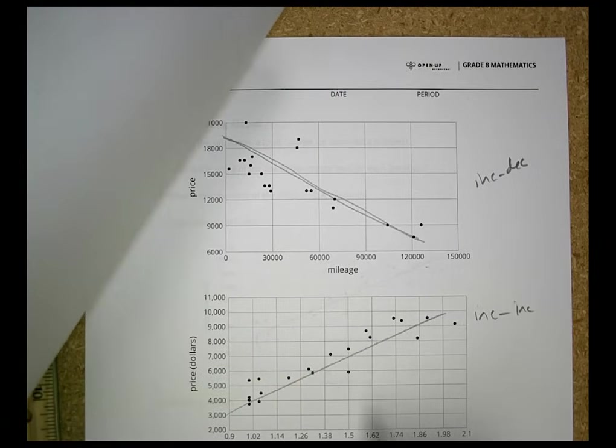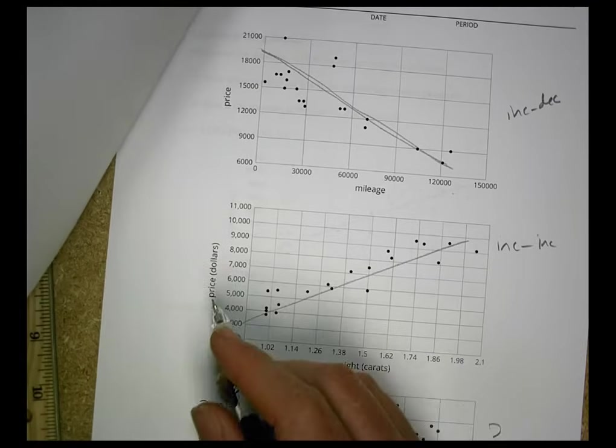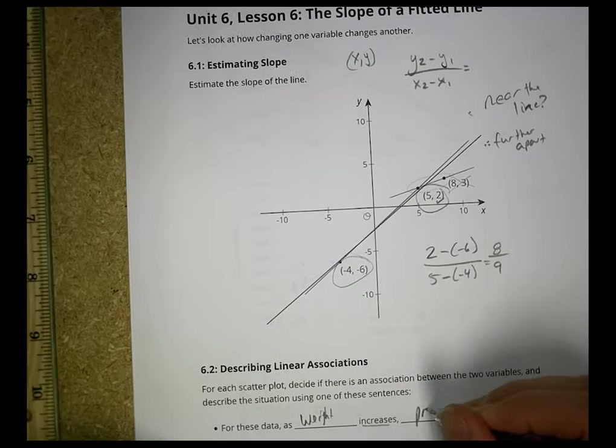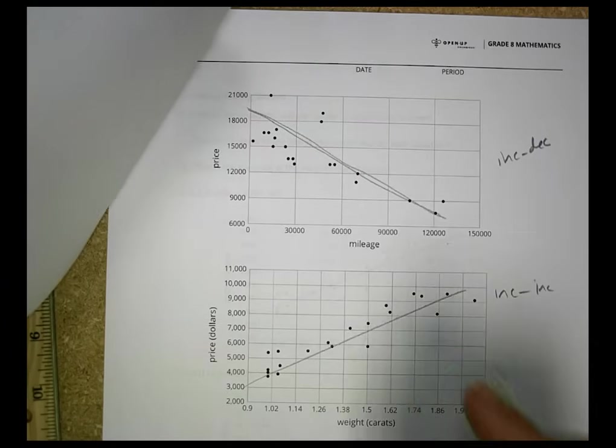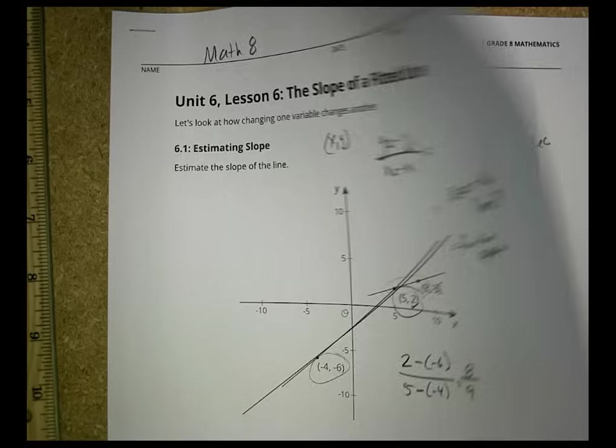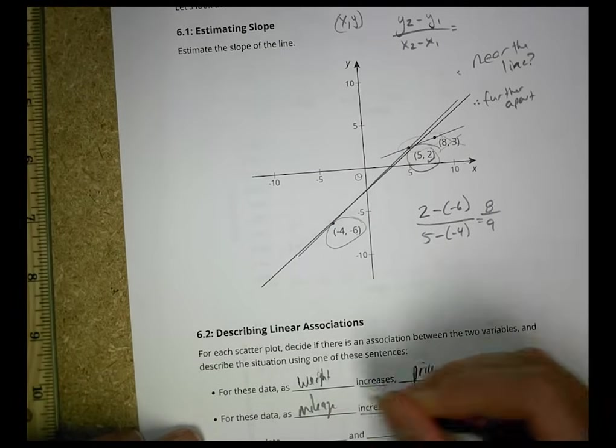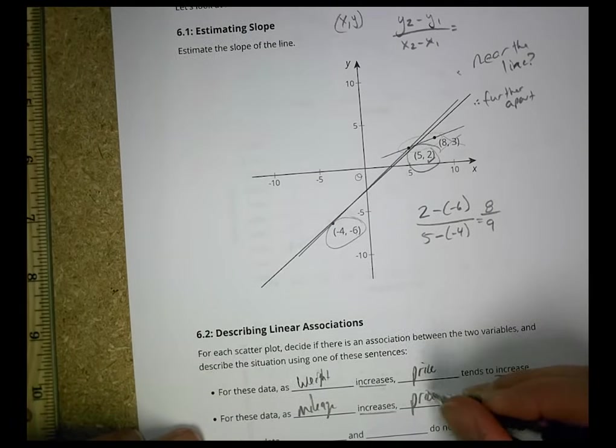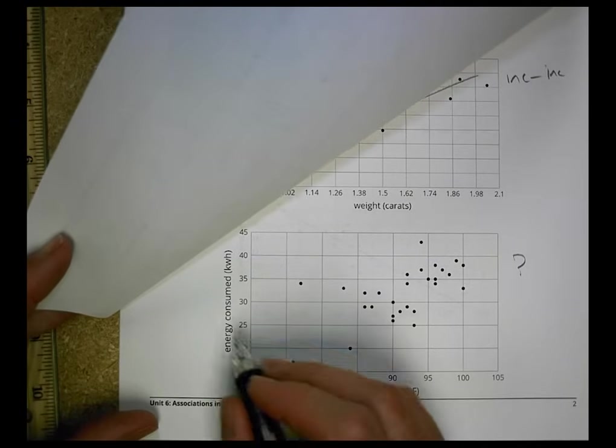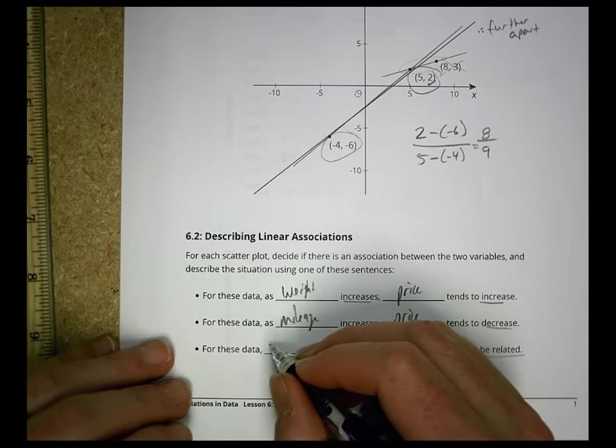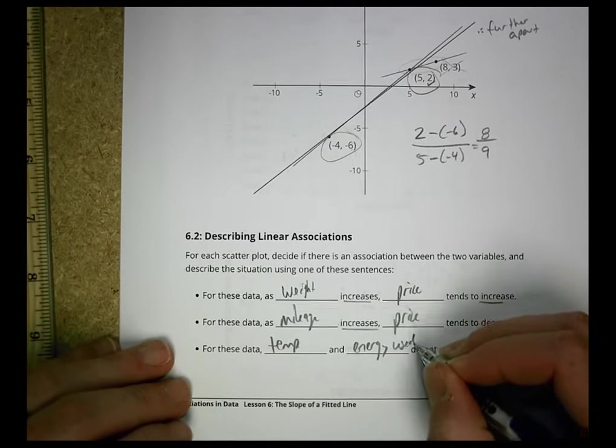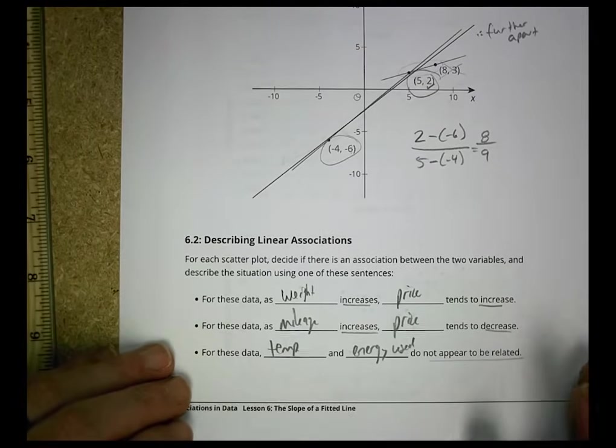So for increase to increase, we'd say as weight increases, price increases. So as the weight of the diamond increases, the price increases. For this one, we'd say as the mileage increases, the price decreases. As mileage increases, the price of a car tends to decrease. And the last one, as temperature increases, energy, eh. So we're going to go temperature and energy used or consumed don't appear to be related. At least not in any major way there.